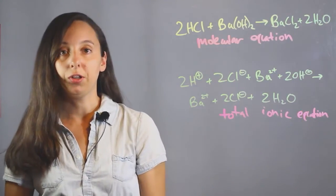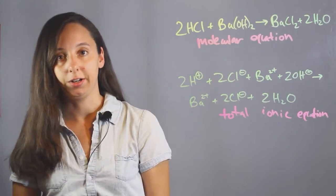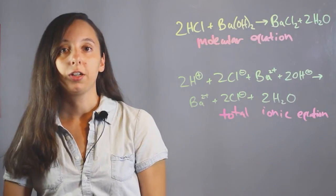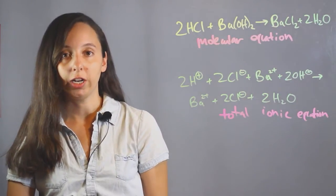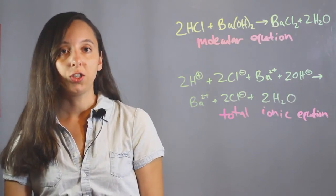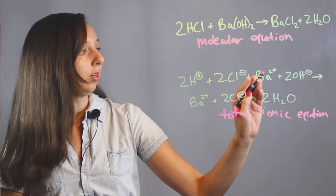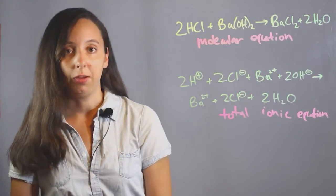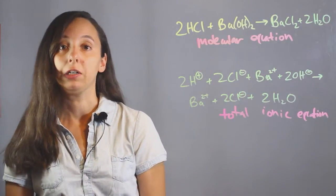And now what we're actually looking for is the net ionic equation. And so the net ionic equation means things that are actually changing, not including ions that stay the same and don't do anything. So to find this, we look at our total ionic equation and we find what just stays the same on both sides, because this means it really didn't react.